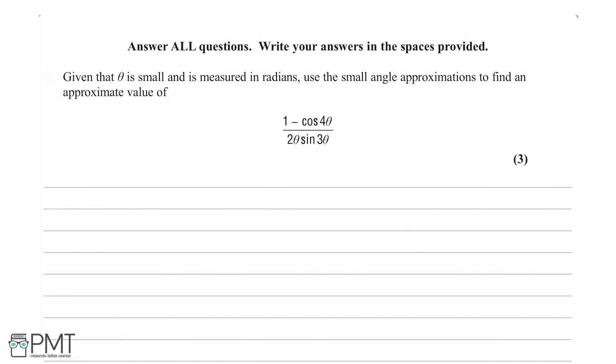Hello and welcome to today's video solution. We will be answering the question in front of us, so let's start by giving it a quick read. Given that θ is small and is measured in radians, use the small angle approximations to find an approximate value of (1 - cos 4θ)/(2θ sin 3θ) for three marks.